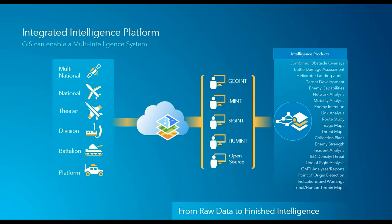ArcGIS is a platform for intelligence. It is designed to ingest and display data from multiple types of sensors, including national, theater, and tactical level sensors and sources. Analysts leverage various integrated tools to reveal patterns and relationships within and across multiple intelligence disciplines, and can apply existing workflows and tradecraft to create intelligence products. ArcGIS truly integrates people, technology, and processes to support multiple missions.